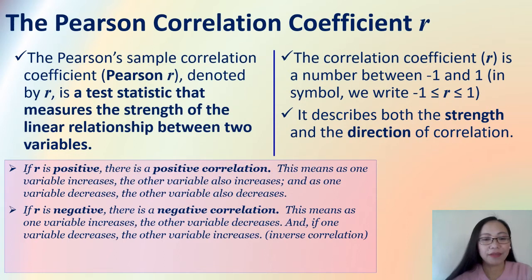Now, if R is negative, we have a negative correlation. This means one variable increases, the other variable decreases. And if one variable decreases, the other variable increases. This is also known as inverse correlation.